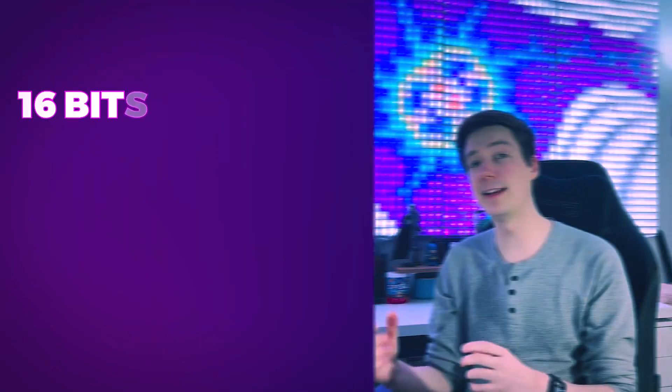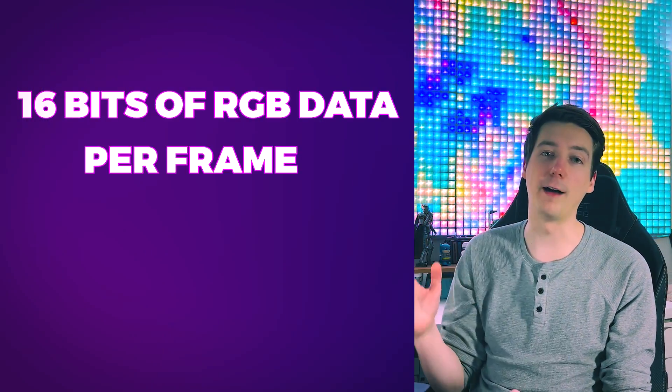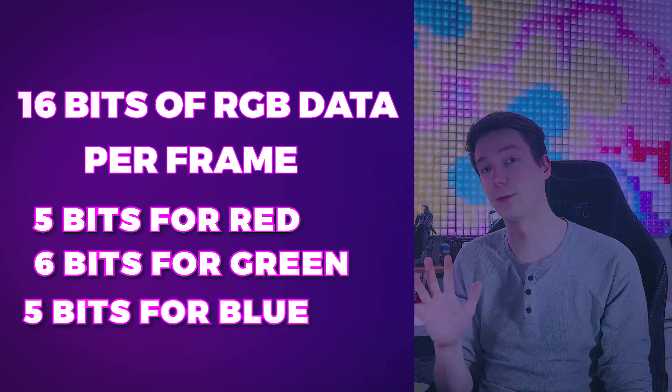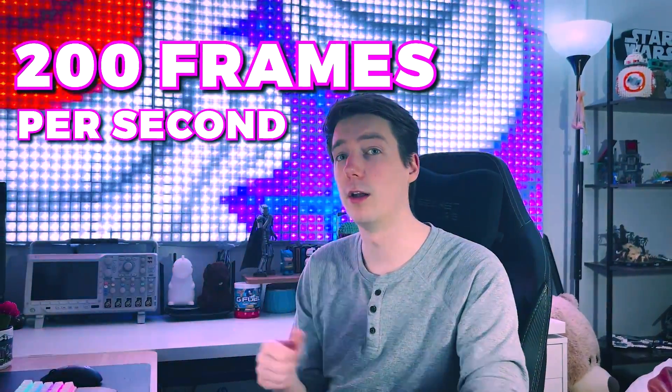The code I wrote gets the pixel data over USB serial, which has a maximum supported baud rate just under one megabit per second — which is not very fast. This wall is only 64 pixels wide by 36 pixels tall, and each pixel requires 16 bits of RGB data per frame: 5 bits for red, 6 bits for green, and 5 bits for blue. Each frame contains 4,600 bits of data, which means we get a theoretical maximum throughput of 200 frames per second. In reality, we only get about 20 frames per second because these microcontrollers take such a long time to actually drive that data to the pixels. And on top of that, the amount of data goes up exponentially as you increase the number of pixels.